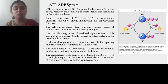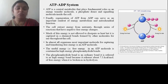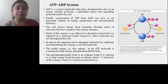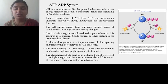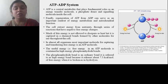The cell extracts energy from nutrients through a series of reactions called metabolic pathways that have negative free energy changes. Much of this energy is not allowed to dissipate as heat but is captured in chemical bonds formed by other molecules for use throughout the cell. In almost all reactions, the most important molecule for capturing and transferring free energy is ATP — that is why ATP is called the energy currency. The useful free energy in the ATP molecule is contained in the high-energy phosphoanhydride bond, which releases about 7.3 kilocalories per mole of free energy when it is broken during hydrolysis.